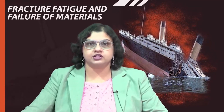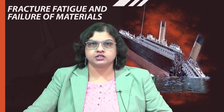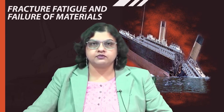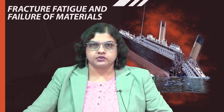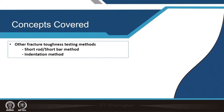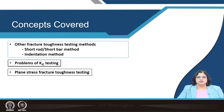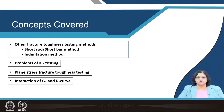Hello everyone, here is the twelfth lecture of the series Fracture, Fatigue and Failure of Materials. In the last lecture we saw how plane strain fracture toughness is determined, and in the present lecture we will continue with that and move towards plane stress fracture toughness testing. The concepts covered include other fracture toughness testing methods for brittle materials such as the short rod or bar method and the indentation method, difficulties with K1C testing, and the interaction between the G and R curve.